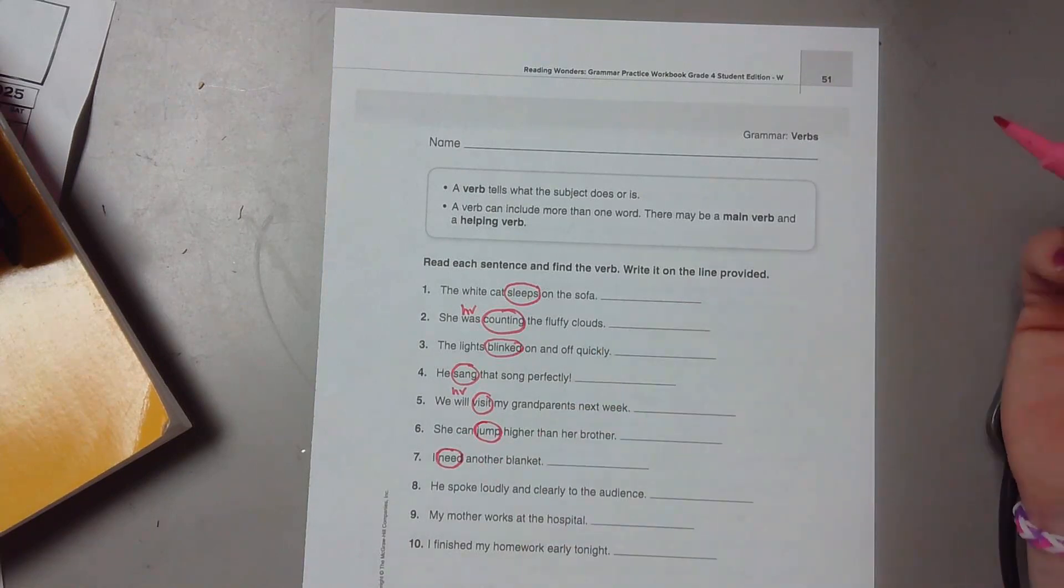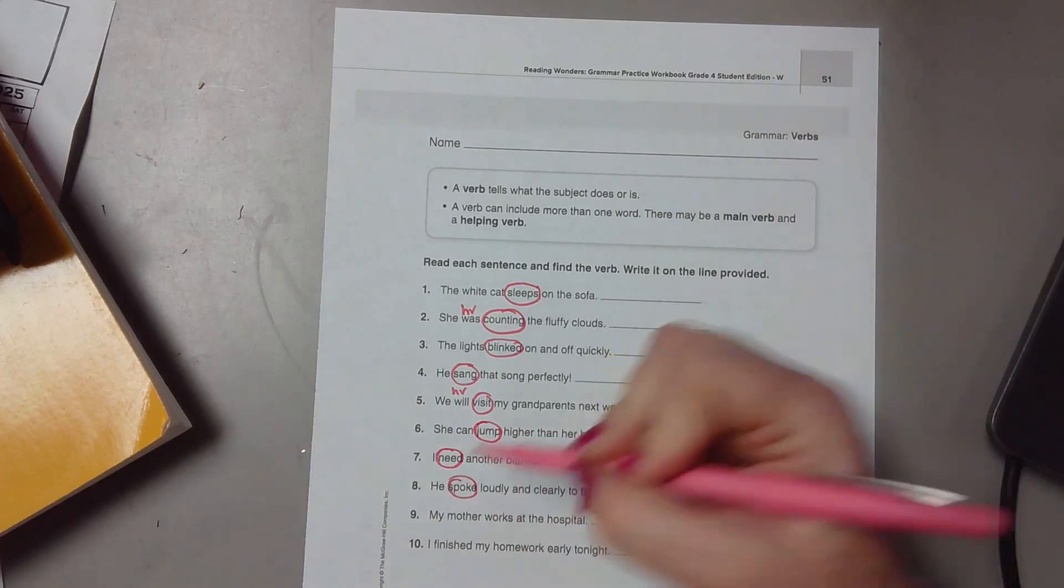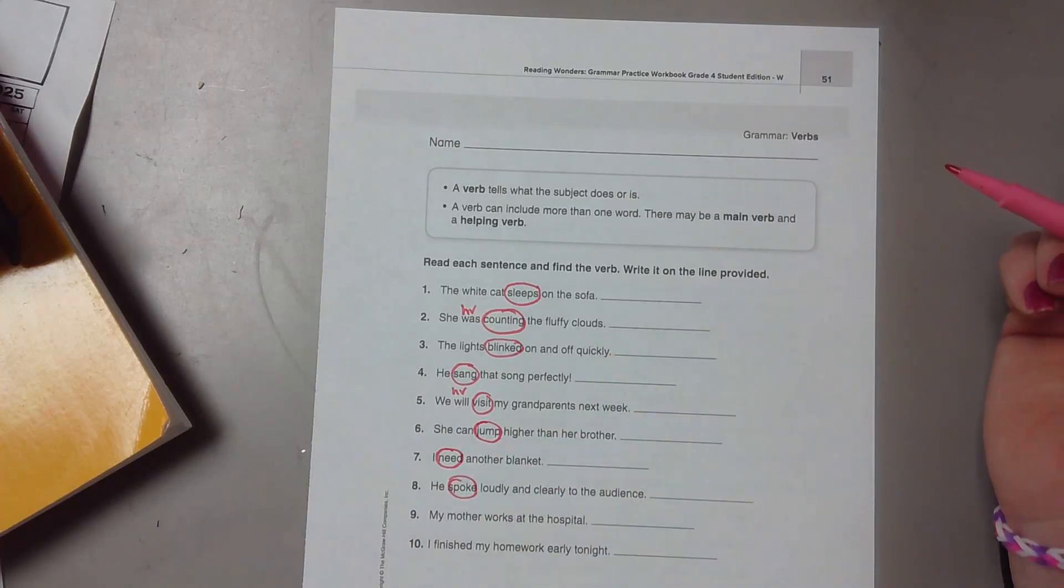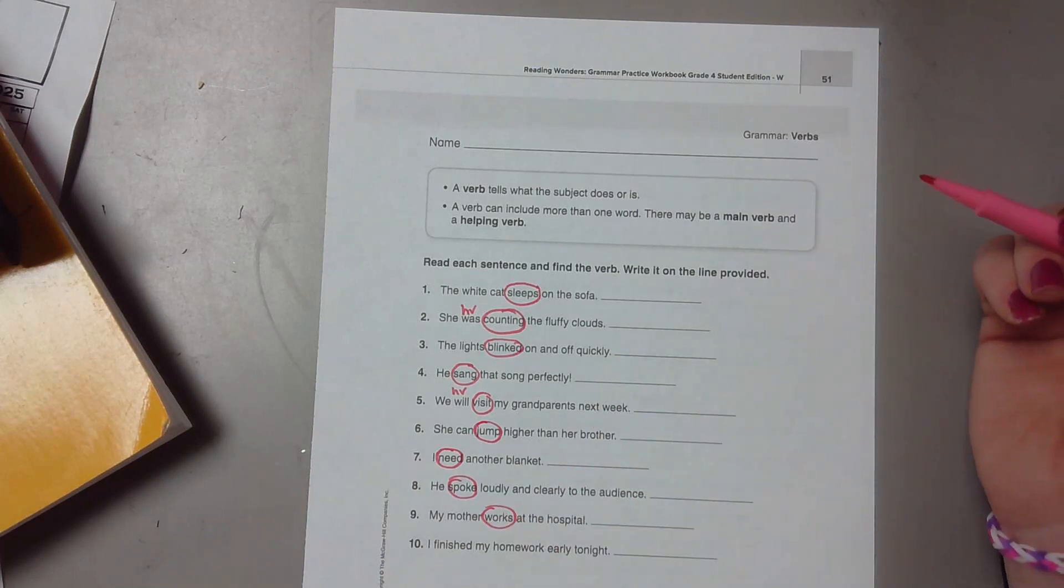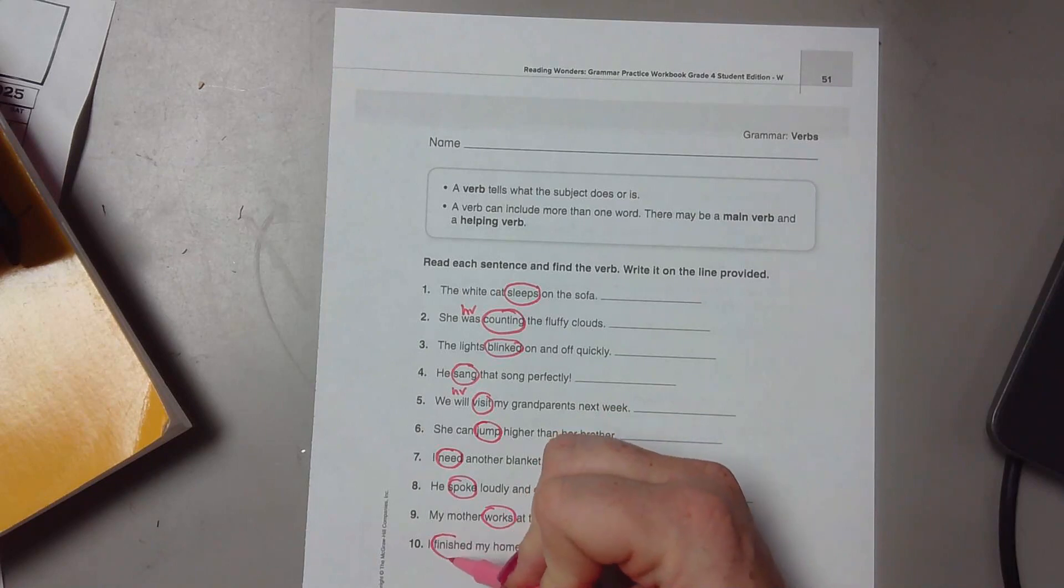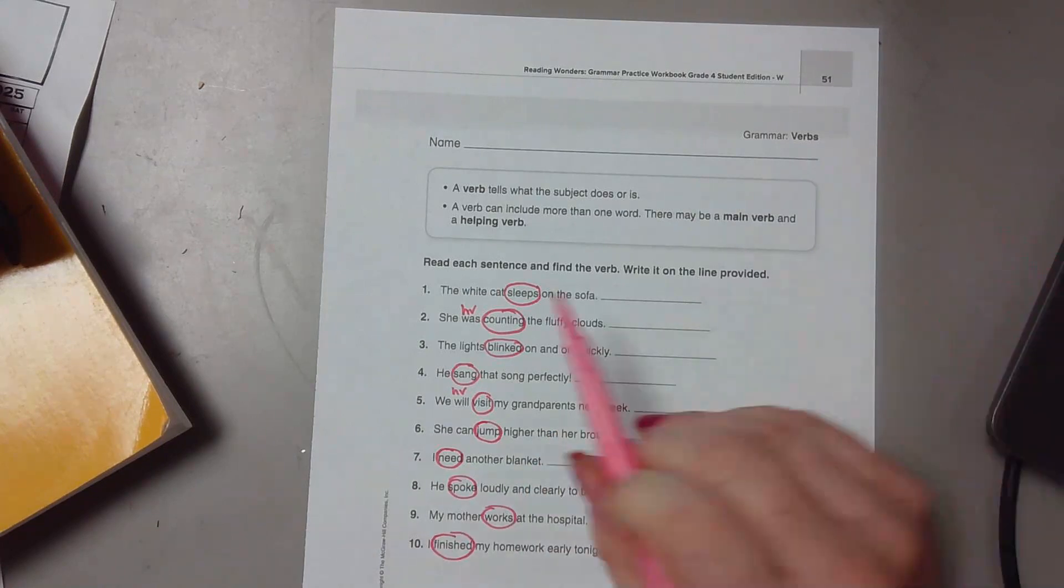Number seven: I need another blanket. Need. Number eight: he spoke loudly and clearly to the audience. Spoke. Number nine: my mother works at the hospital. Works. Number ten: I finished my homework early tonight. Finished. Good job.